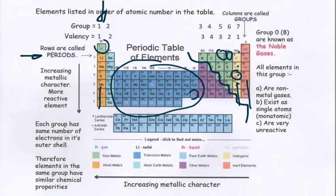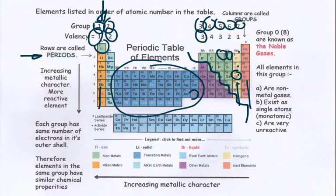The group number indicates the number of outer electrons present in that group — group one has one, group six has six. This gives rise to the valency, which is the number of bonds that an atom can make. Metals can make one if in group one, two if in group two, three if in group three. Non-metals can make three if in group five, two if in group six, one if in group seven. Group eight — the noble gases — are monatomic and do not make any bonds. The bonding is there to give the atom a full outer shell if possible.